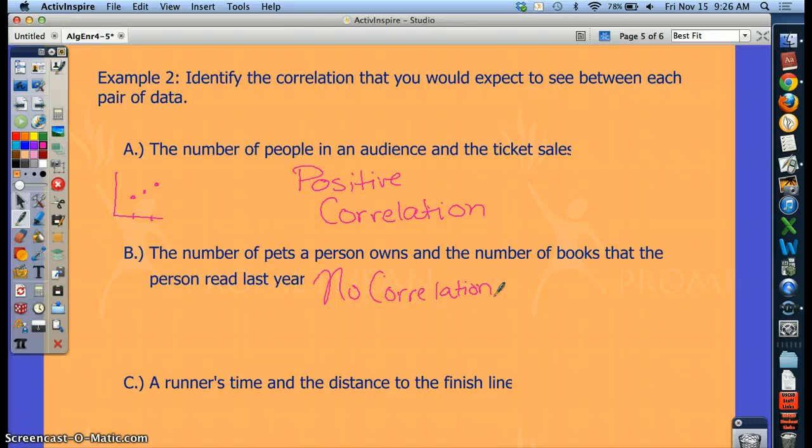And the last one, a runner's time and the distance left to the finish line. So think about it as a runner's time and the distance left to the finish line. Well, when you start a race, you've been running for zero amount of time, you have the full distance to go. Let's say you're running a half marathon. So at the beginning of time, you have 13.1 miles. After you've ran about 30 minutes, you might only have 9 miles left. After you run an hour, you might only have 5 miles left or something like that. So the trend is going to be what type of correlation, positive or negative? This one's going to be negative. The longer you run, the less distance you have left to go. So one is increasing, the other one is decreasing. You'll try a few more of those on your own as well.